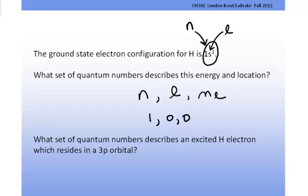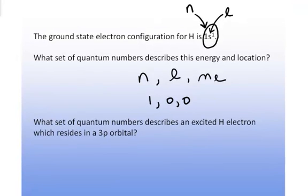What set of quantum numbers describes an excited electron in a hydrogen atom which resides in a 3p orbital? The number is telling us what the energy is, the N value. The letter is telling us the L value, because we have to memorize that p corresponds to an L value of 1. In this case, the set of quantum numbers that would describe that particular orbital would be 3 for the principal, equal 1 for the angular momentum, and then for the M sub L that goes with this L equals 1...